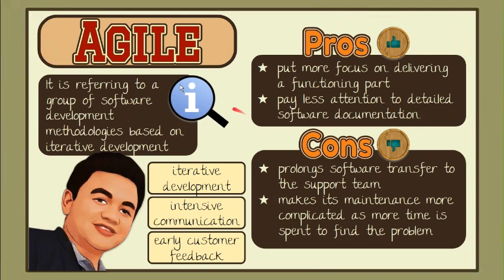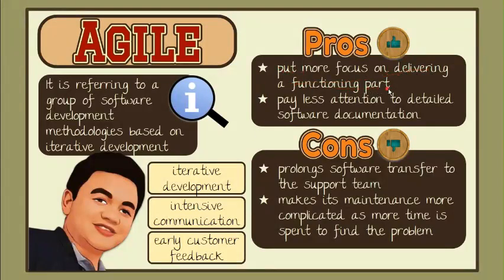These shortcomings have given room to alternative approaches and models. This brings us to the next methodology called Agile. This is actually referring to a group of software development methodologies based on iterative development. At the heart of Agile methodologies are iterative development, intensive communication, and early customer feedback. It means Agile is about working in close collaboration both across the team and with the customers. The models of this group put more focus on delivering a functioning part of the application quickly, paying less attention to detailed software documentation and more to software testing activities. This fosters quick development but considerably prolonged software transfer to the support team, making maintenance more complicated as more time is spent finding the problem when there's no detailed software description.